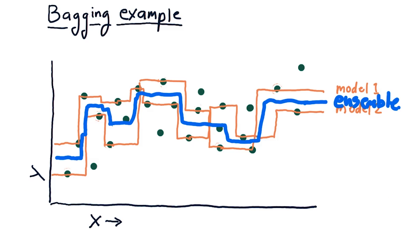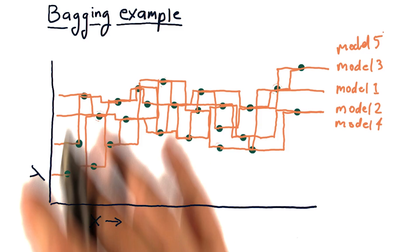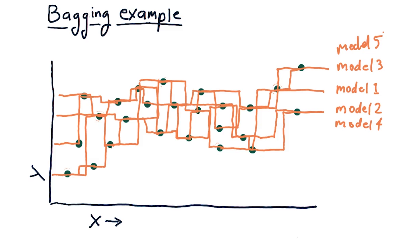But let's add some more models. So I've drawn over here a couple more one nearest neighbor models. And you can see each one of them individually sort of overfit.